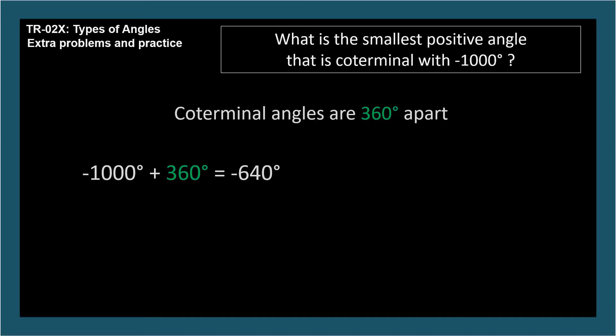We haven't reached a positive angle yet, so let's do it again. Negative 640 degrees plus 360 degrees equals negative 280 degrees. Still not a positive angle, so add another 360 degrees to get 80 degrees. Okay, that's a positive angle, so the answer is 80 degrees.